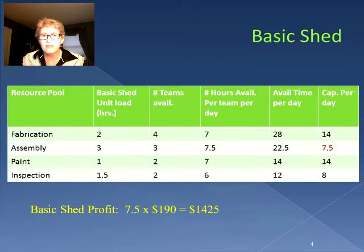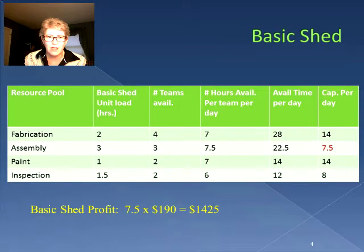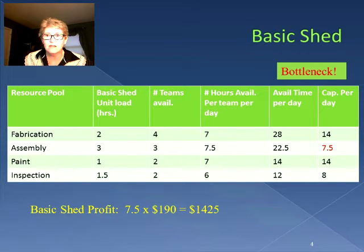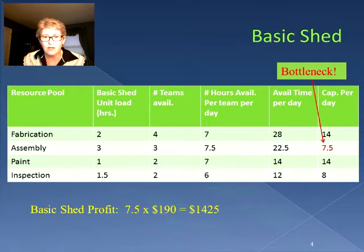Looking at assembly, that's 7.5 sheds; paint 14, and inspection 8. When we calculate the profit just on basic sheds, we take the maximum number of sheds we can produce, which in this case is 7.5 because our bottleneck is the assembly resource. We multiply that 7.5 by the $190 profit, which gives us $1,425.